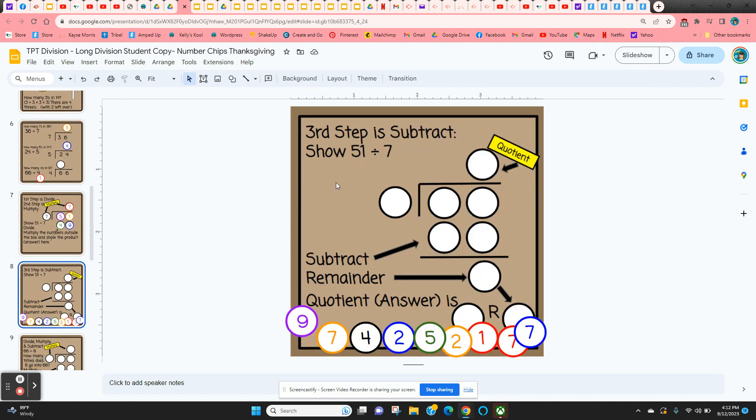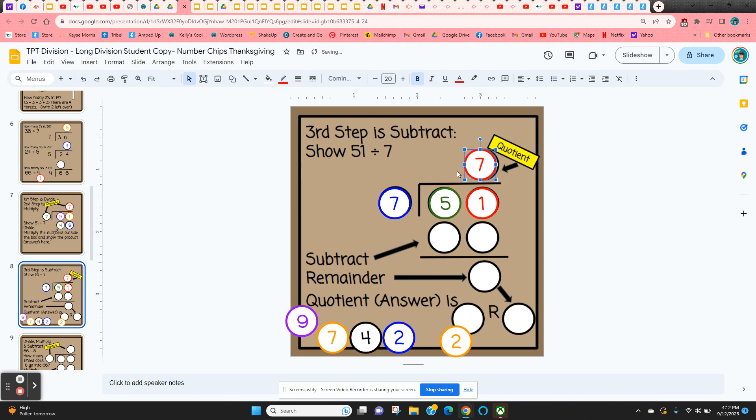The third step is to subtract. So here we're going to start again. We have 51 divided by 7. We already started it on the previous slide. So 51 divided by 7. And then we're going to divide. So 7 goes into 51 seven times. Second step is to multiply. We get 49.